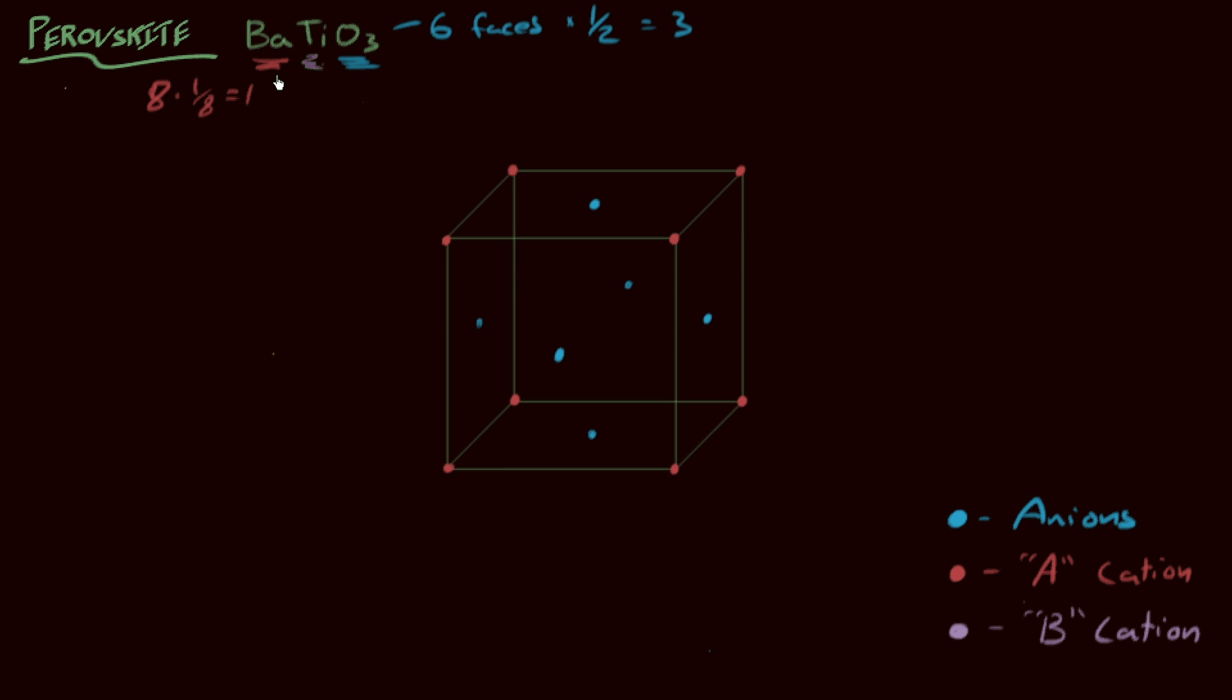And then what about the B cation? That's the titanium. That fellow is going to go right in the very center of the cube, and I've drawn in faintly here the direction of contact between this central cation here, the B cation, and the nearest neighbor oxygens. The coordination number for the B cations is very straightforward. One, two, three, four, front, back, left, right, top, bottom. Coordination number of six, that's an octahedral site.